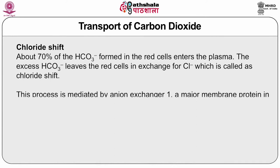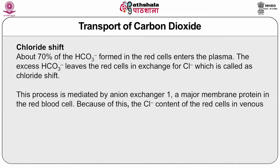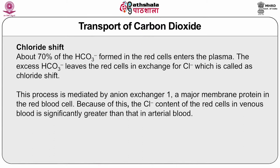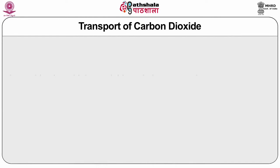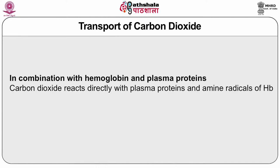The excess bicarbonate ions leave red cells in exchange for chloride — this is called the chloride shift, mediated by anion exchanger 1, the major membrane protein in red blood cells. Because of this, the chloride content of red cells in venous blood is significantly greater than in arterial blood. The Haldane effect: combination of oxygen with hemoglobin in the lungs causes hemoglobin to become a stronger acid, displacing carbon dioxide from blood into the alveoli. Carbon dioxide also reacts directly with amine radicals of hemoglobin to form carbaminohemoglobin, a reversible reaction accounting for 20–30% of CO2 transported by blood.